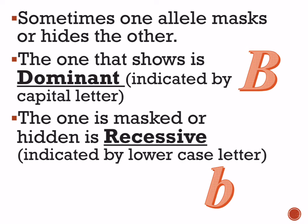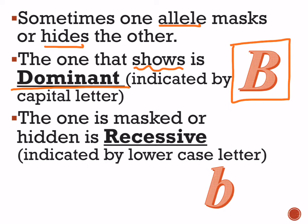Now when we're talking about alleles, sometimes one allele masks or hides the other allele. The one that always shows we call the dominant allele, and the dominant allele is represented by a capitalized letter when we're doing genetic studies. The other allele — the one that is masked or the one that hides — we call recessive.